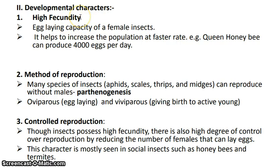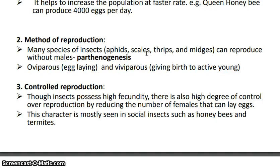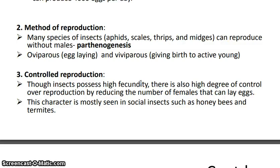Insects have high fecundity — the power or potential to lay a very large number of eggs — so their reproductive rate is high. Most insects can reproduce without males through a process known as parthenogenesis. Some insects are oviparous and some are viviparous, giving birth to active young ones. There is also a high degree of control over reproduction by decreasing the number of females that can lay eggs, most visible in social insects like honeybees and termites.